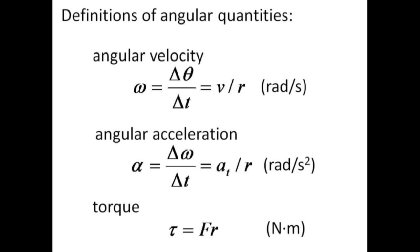Angular acceleration, alpha, is the rate at which an object increases its rotational rate in radians per second squared. Dividing the tangential acceleration by the radius will give angular acceleration. The application of torque, tau, is what causes an object to angularly accelerate. Multiplying the tangential force by the radius at which the force is applied gives the torque.